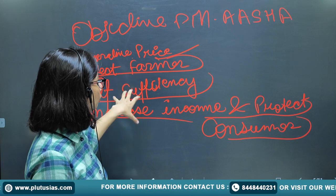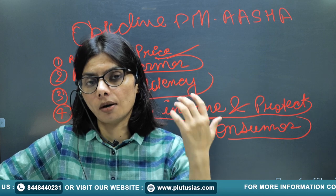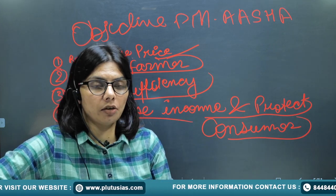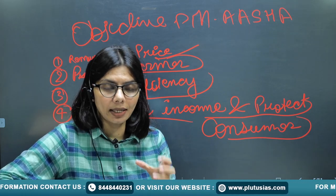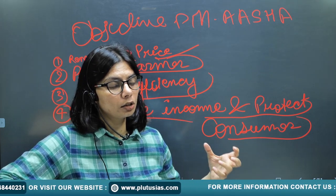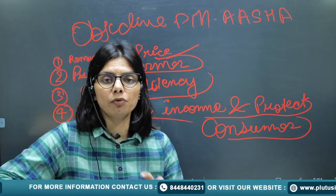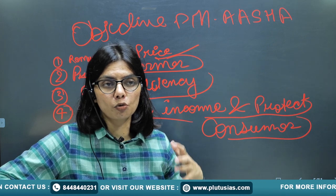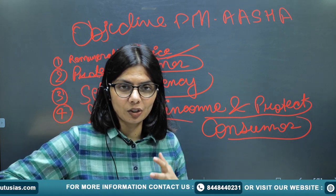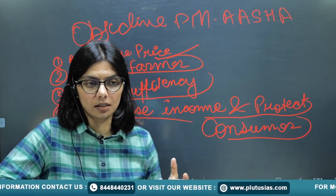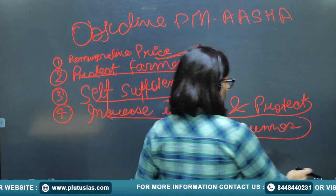Protecting the consumer is also a key objective. As prices go up, many people — especially those unable to meet basic necessities — suffer greatly. Pulses are a main source of protein for everyone, and oil is a main ingredient in street food and daily cooking, so protecting consumers from price spikes is essential.